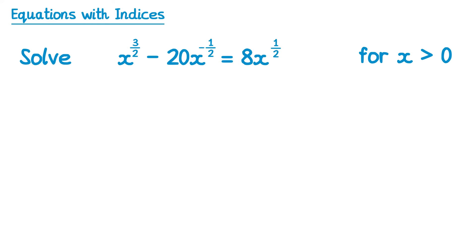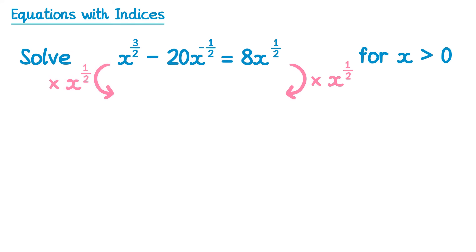Now we're going to look at the final type of question you need to be able to do for this course. We have an equation to solve and we're told it's for x greater than 0. It looks a little bit like a quadratic equation — in fact it is a quadratic equation but just in disguise. We need to do some clever manipulation, and then it will turn into one. In past exam questions it's very common for them to tell you what to do — so what they would say is: multiply both sides of this equation by x to the power one half.